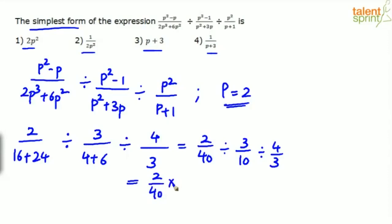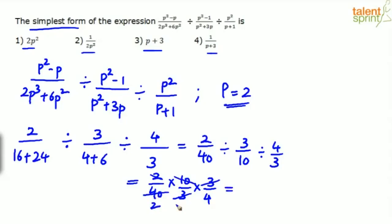Simplifying: the 3s cancel, and we get 2 × 10 / (40 × 4) = 20/160 = 1/8. So by taking p = 2, the expression evaluates to 1/8. Now substitute p = 2 in all four options and see which one gives 1/8.